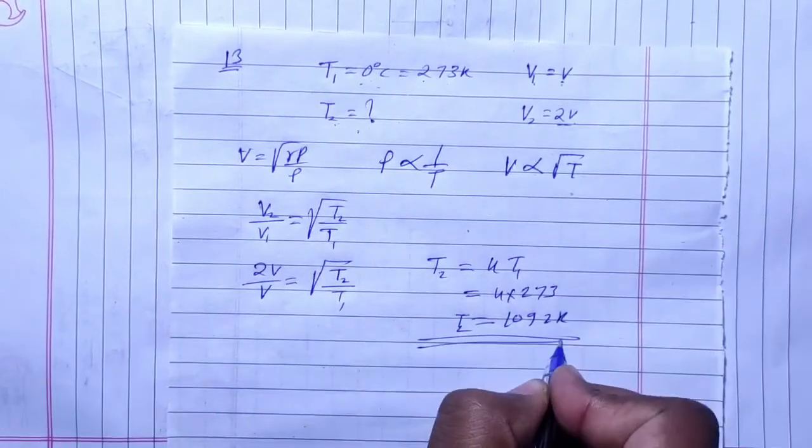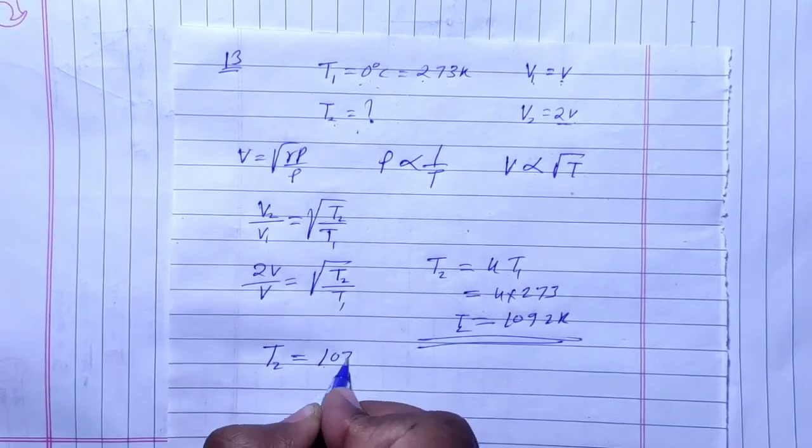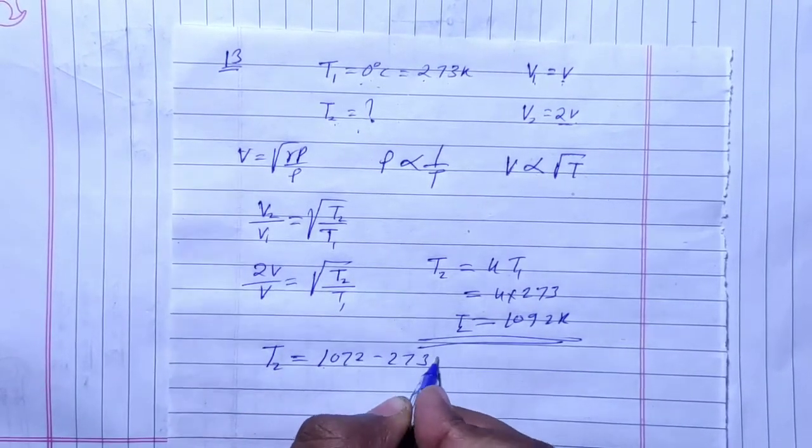T2 is equal to 1092 Kelvin. In Celsius, we subtract 273, so the temperature is 819 degrees Celsius.